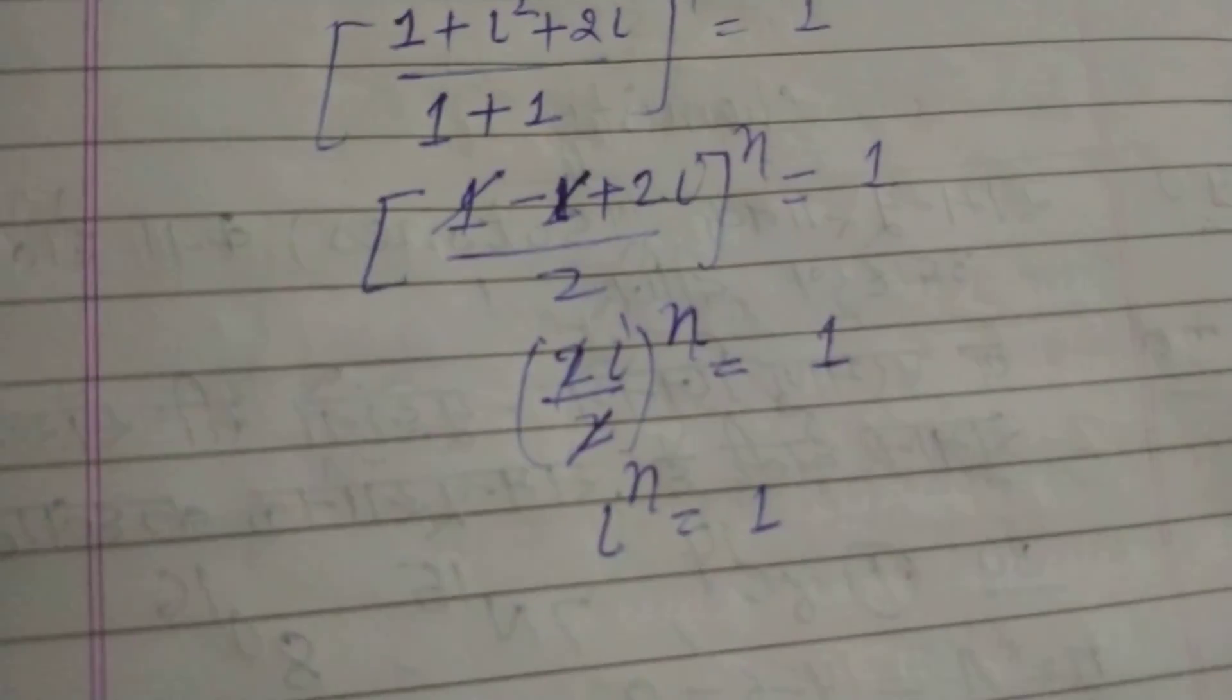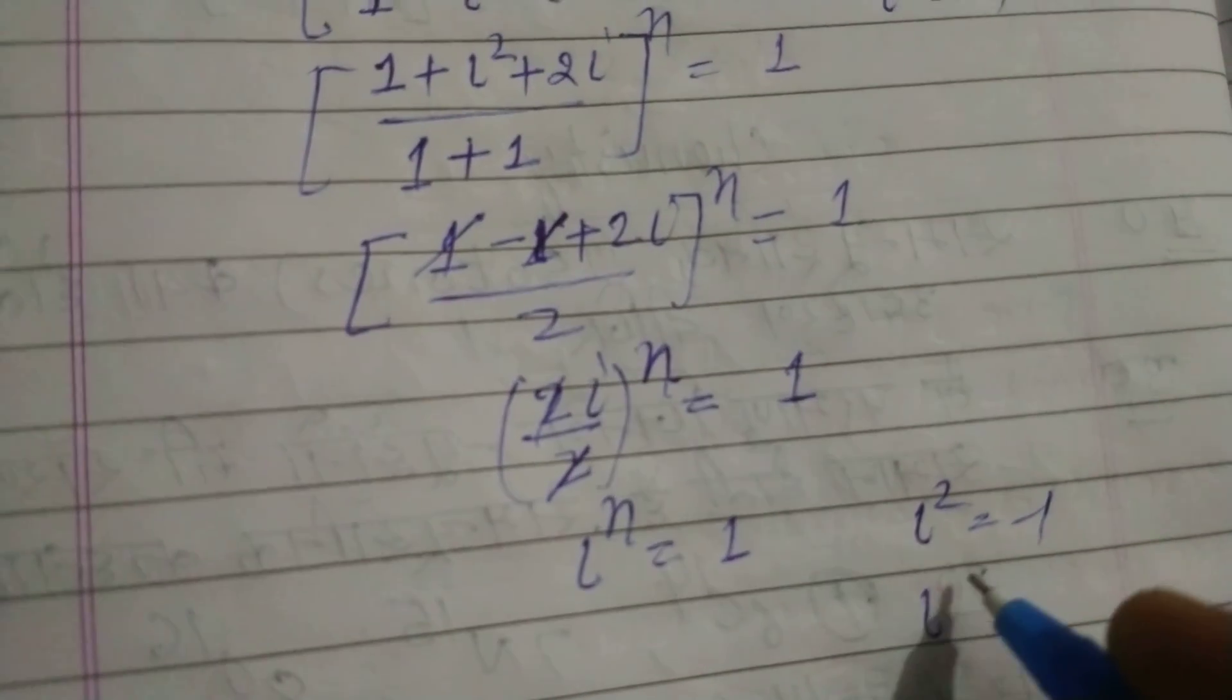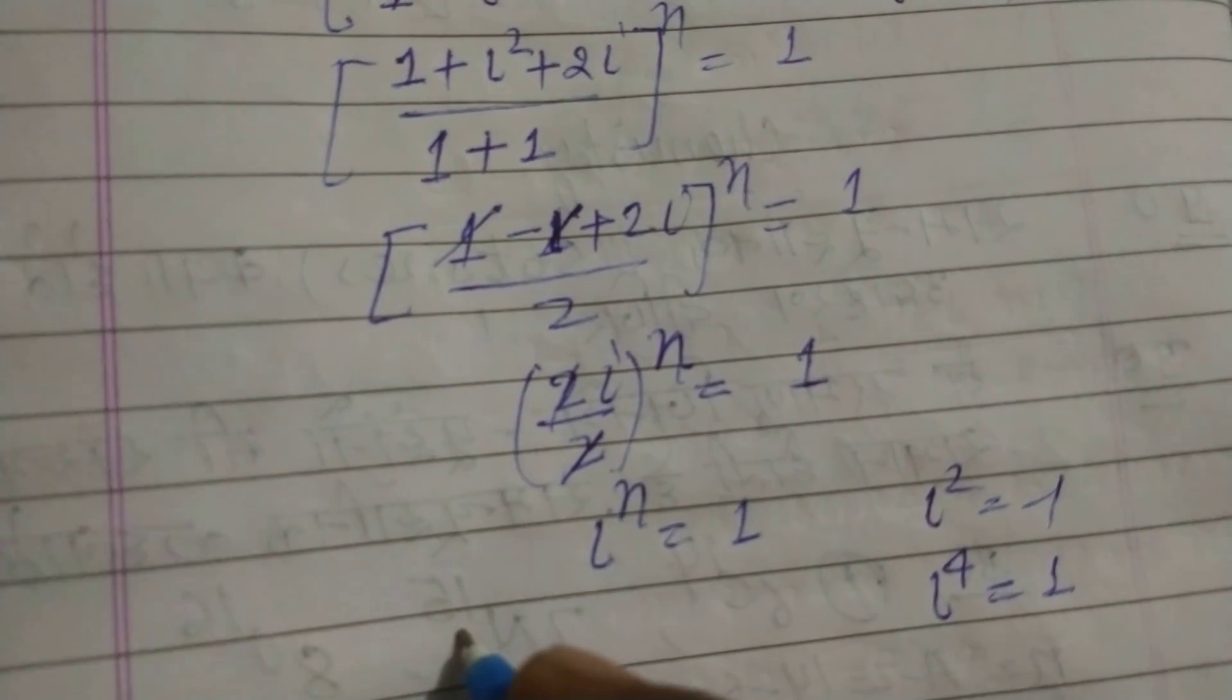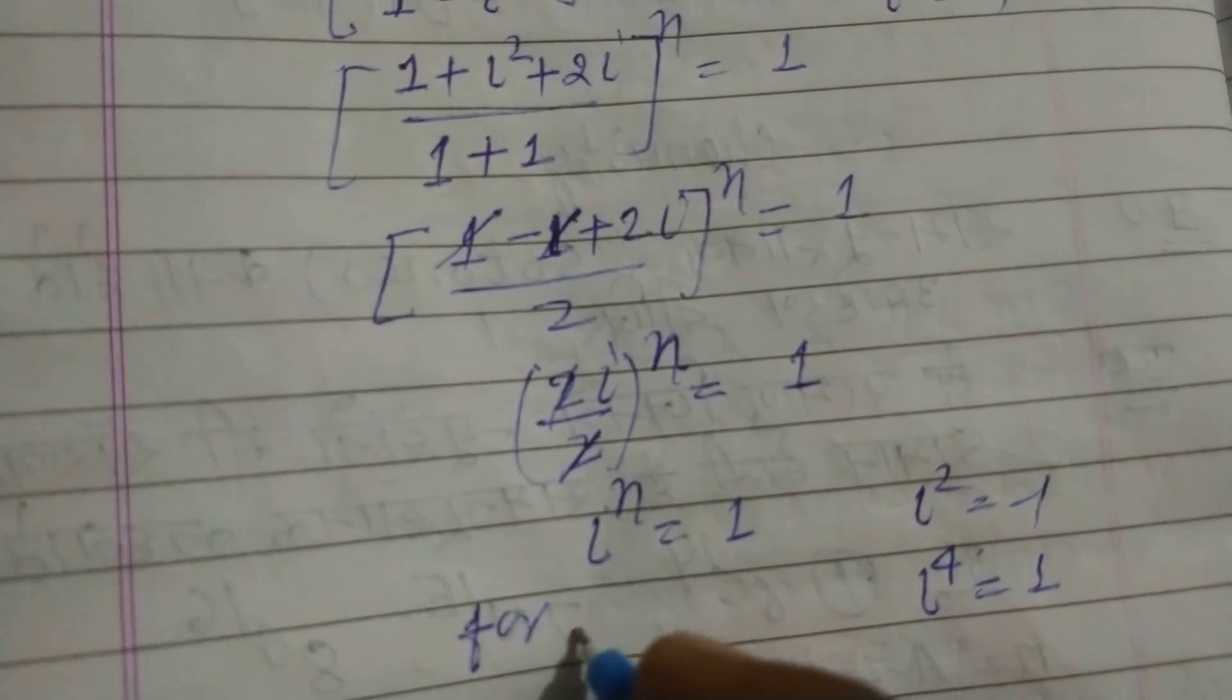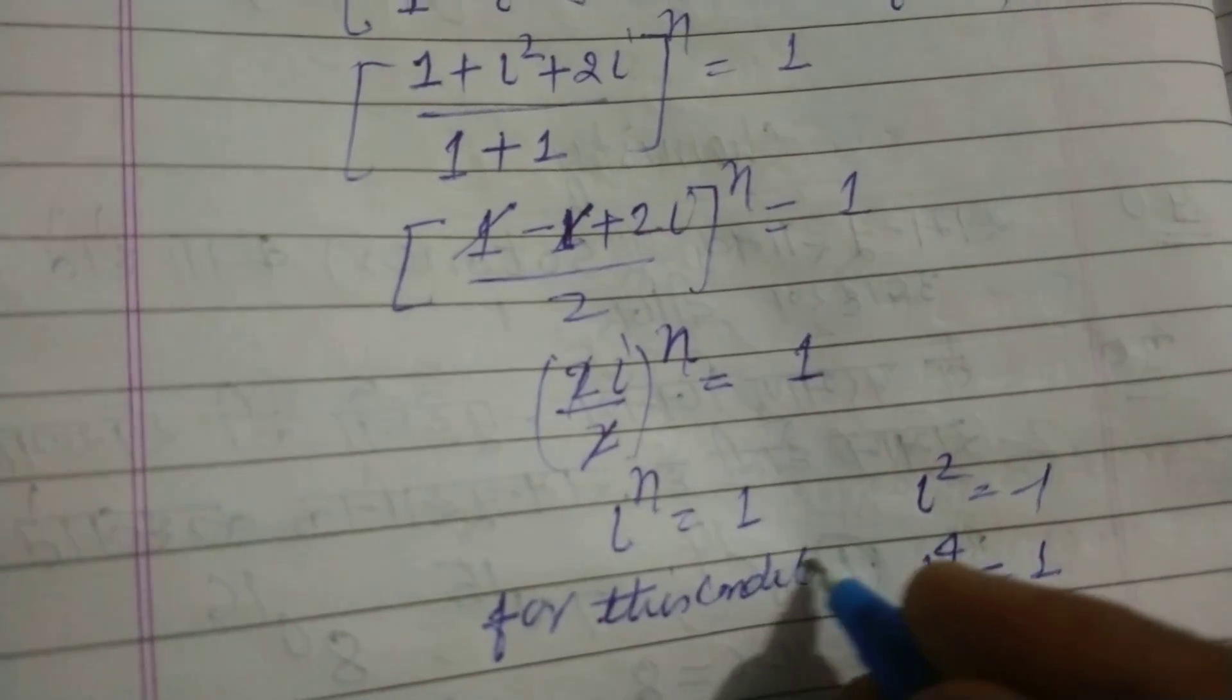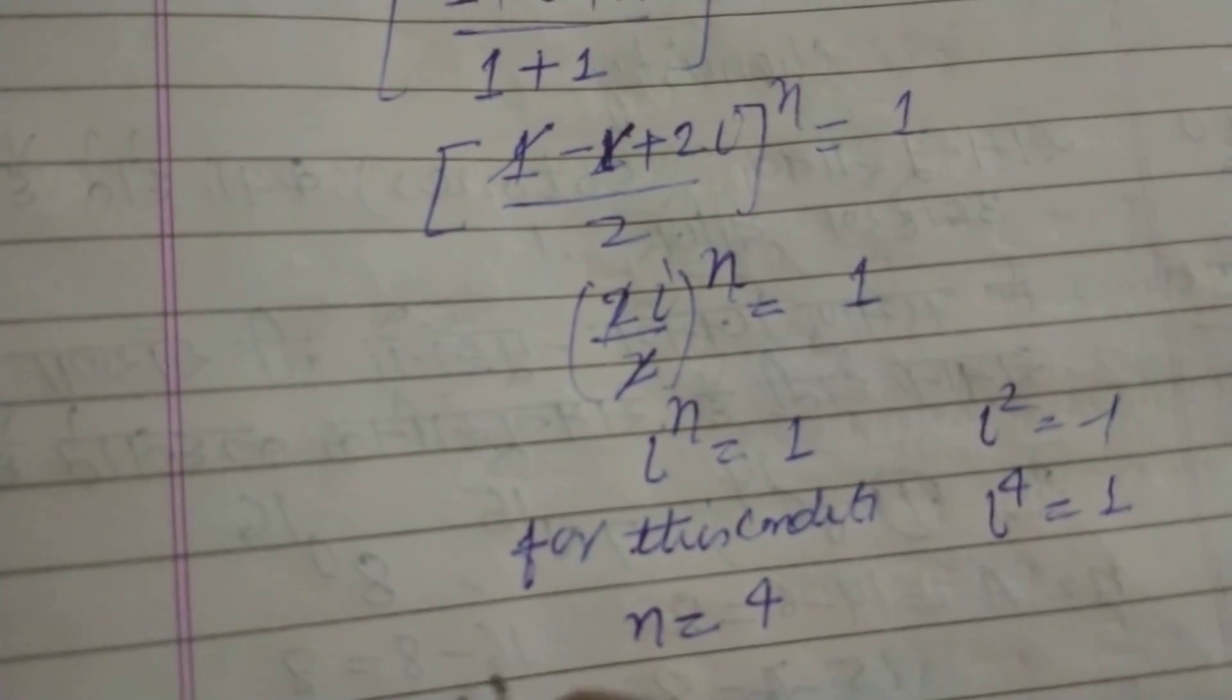So since iota squared equals minus 1, we square again: iota to the power 4 equals 1. So here, for this condition, n should be 4. The minimum value of n should be 4.